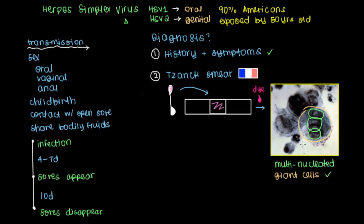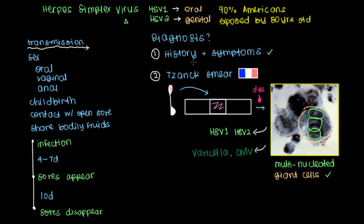But the problem is the Tzanck smear is suggestive of a couple of other things as well. In addition to being positive for HSV-1 and HSV-2, this can also be found with cytomegalovirus, or even with varicella or herpes zoster, which is another type of virus altogether. Which is why this test isn't as commonly done, because usually a history and symptoms can be suggestive of herpes by itself.